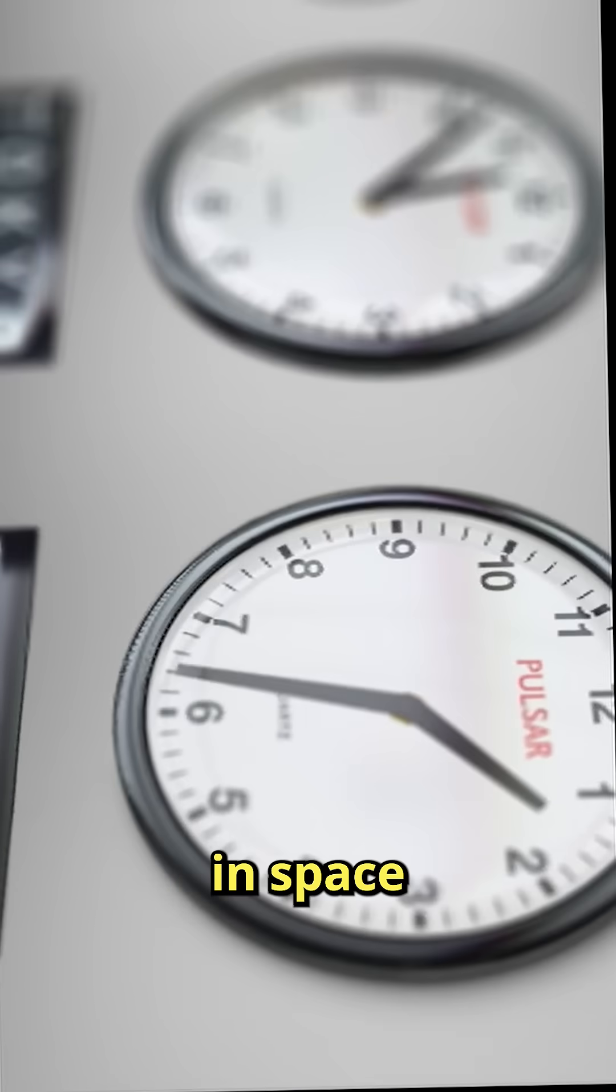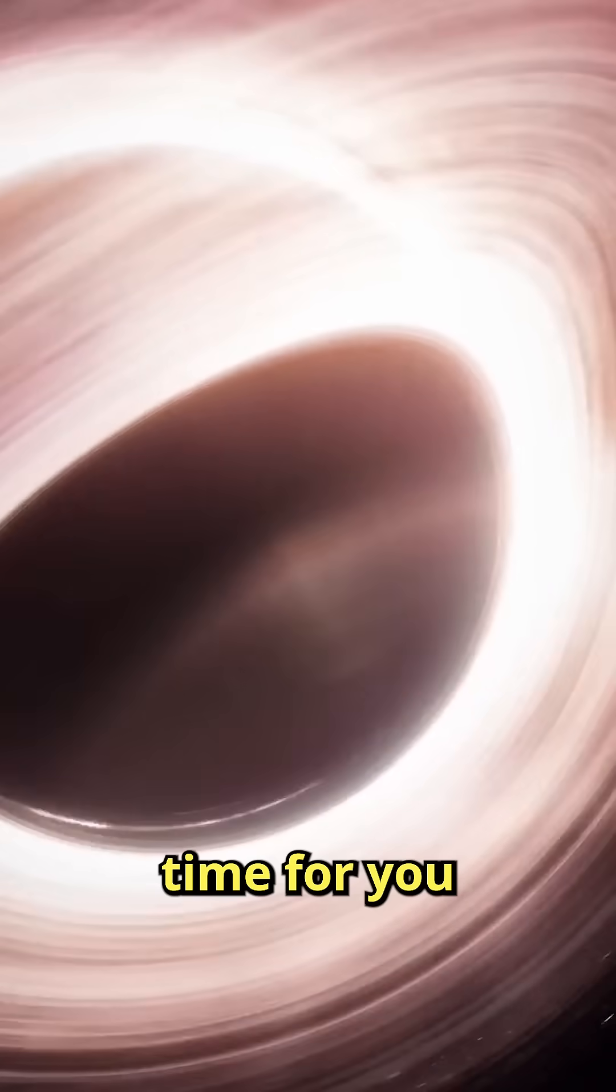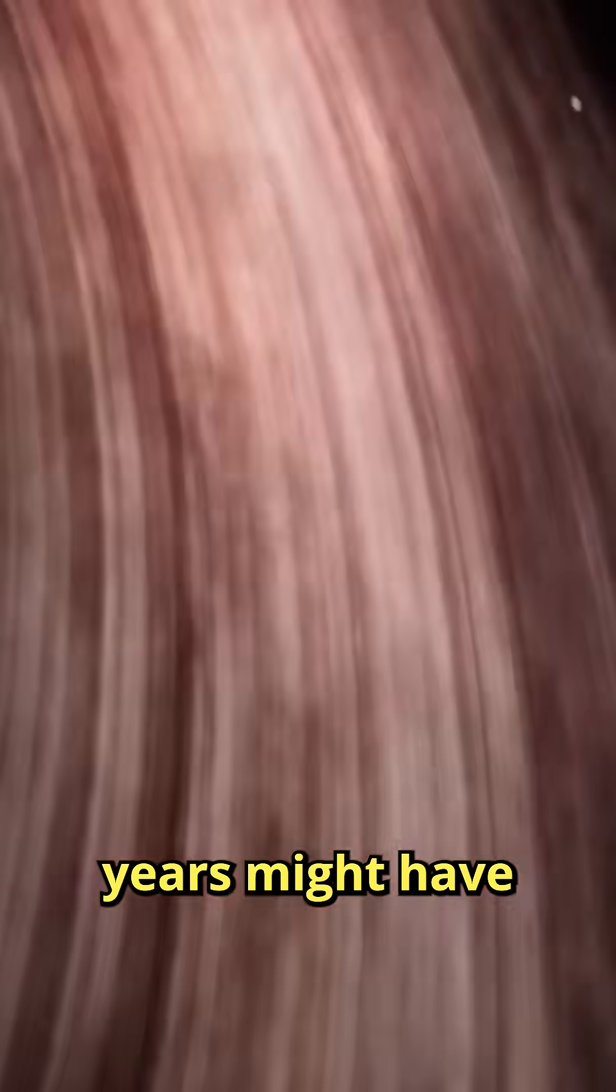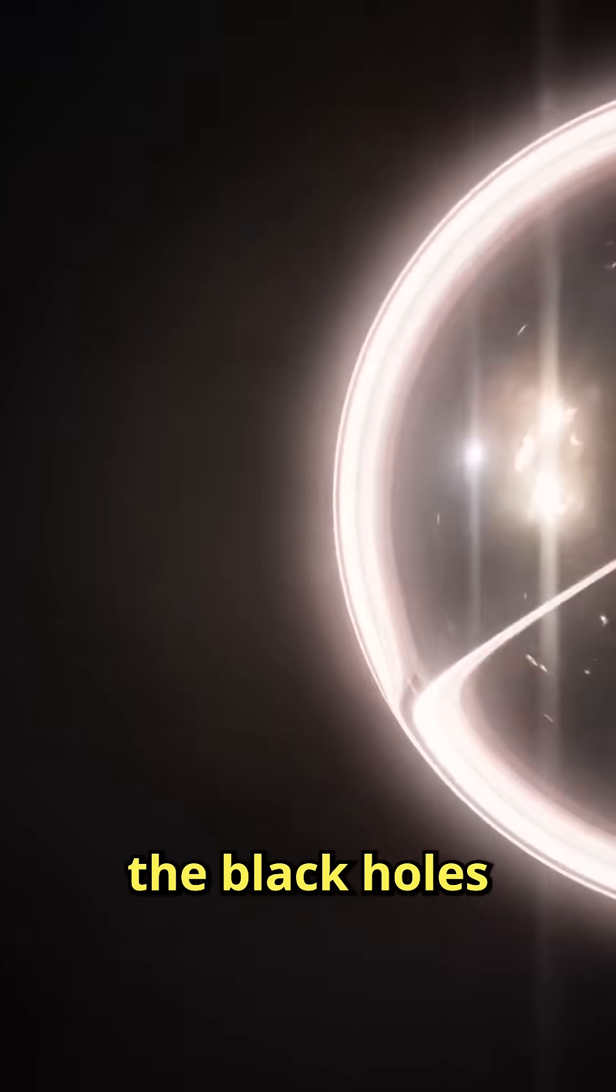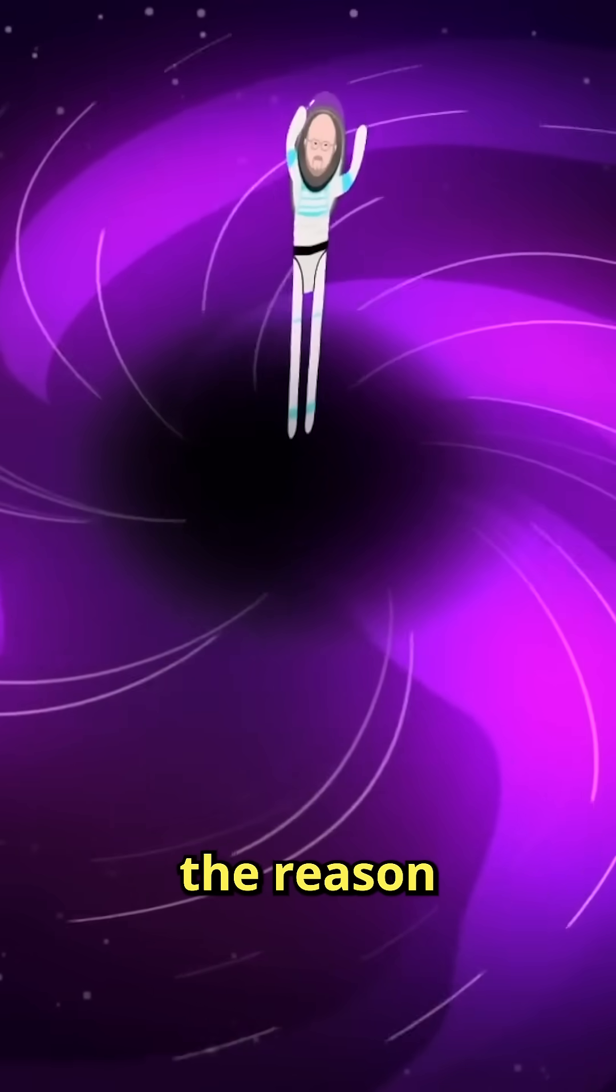And here's where it gets even stranger. If you were out in space, near a black hole, time for you would pass so slowly that by the time you came back, years might have passed on Earth while only a few years had gone by for you. That is, if you don't get trapped beyond the black hole's event horizon.